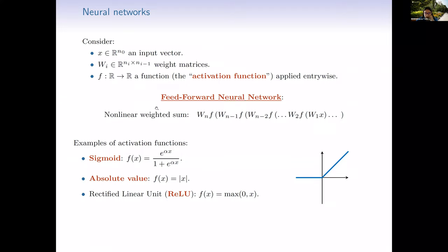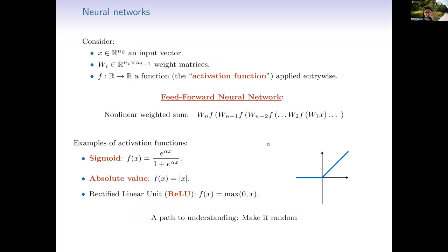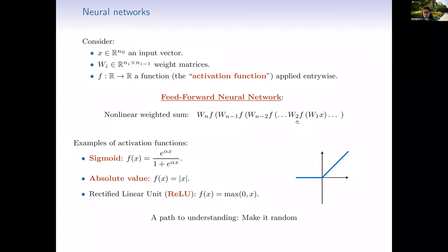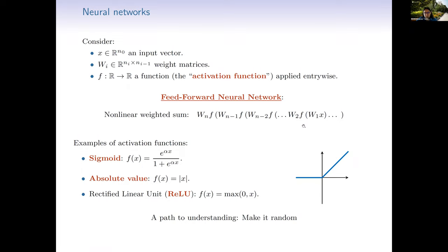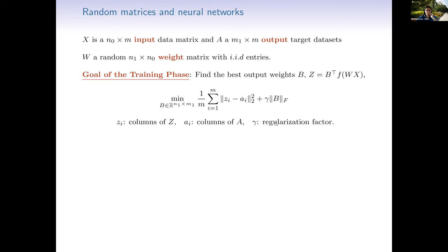The model I'm going to study is based on that. I'll focus on the single-layer case, but we still have some results on multiple layers. In random matrix theory, to understand very complicated systems, one good approach is to make things random — take random weights, random data — and see what happens to different statistics. Random neural networks are also used for initialization with random weights.